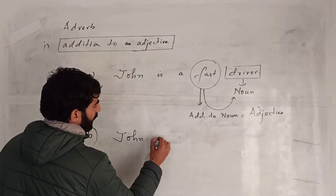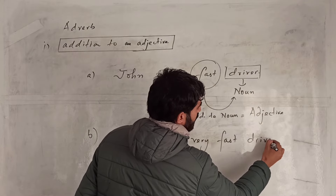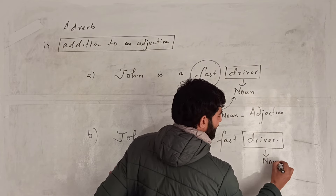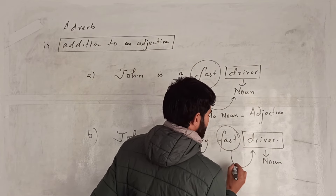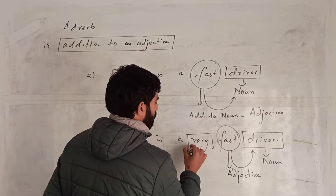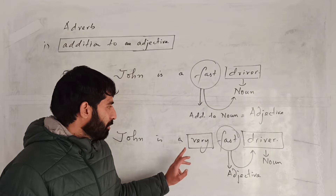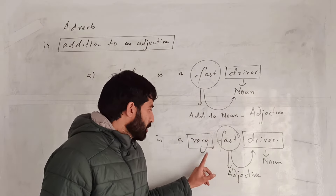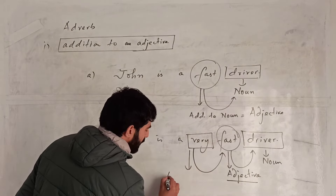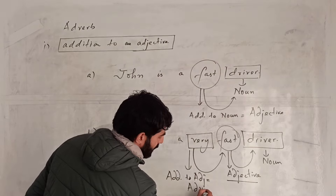In 'John is a very fast driver,' driver is noun, fast is adjective, and very attaches itself with fast. So, very is an addition to the adjective fast. Addition to adjective is equal to adverb. Therefore, very is an adverb here.